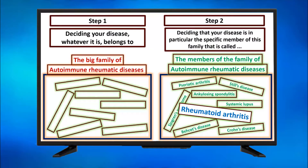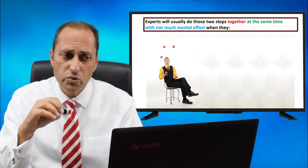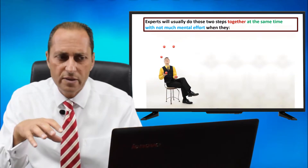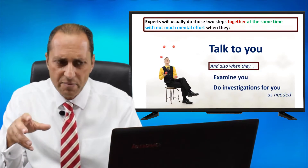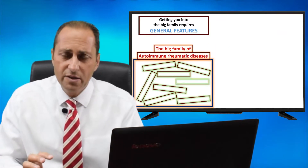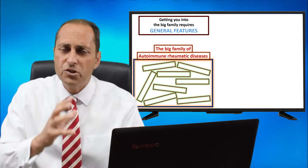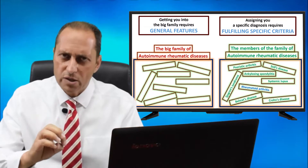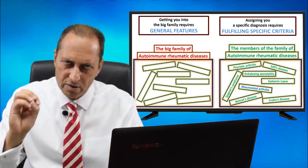You will notice in this figure that on the left side you have only the family — no names of any members. But on the right side you have the names of the members, because we can sort you out as a single member of the family. Experts will usually do those two steps together at the same time with not much mental effort when they talk to you, examine you, and do investigations as needed. Getting you into the big family of autoimmune rheumatic diseases requires general features, and assigning you a specific diagnosis requires fulfilling specific criteria for that particular disease.